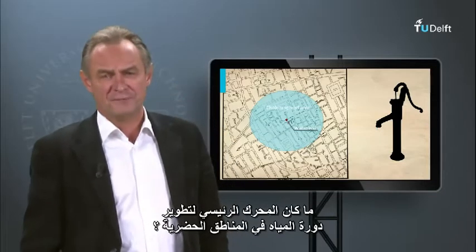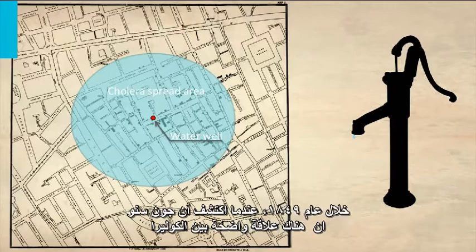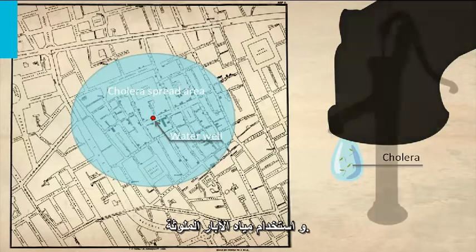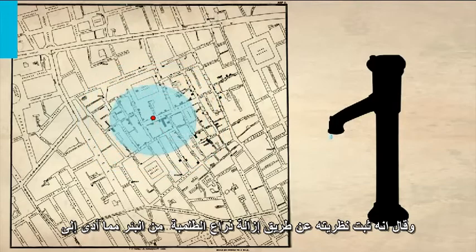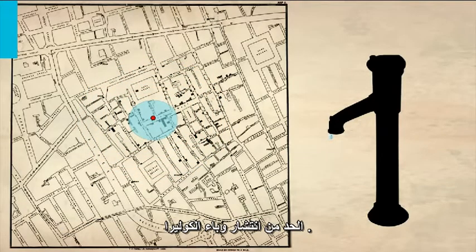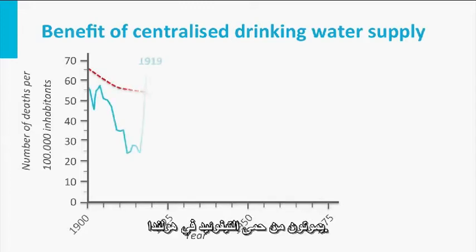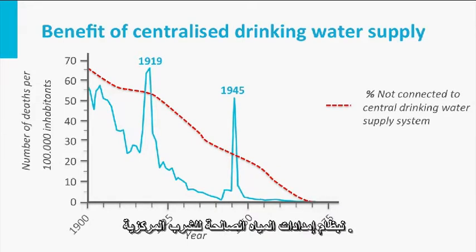What was the main driver for developing the urban water cycle? The centralized sanitation service finds its origin after the cholera outbreak in London during 1849, when John Snow discovered a real relationship between cholera and the use of contaminated water wells. He proved his theory by removing the pump handle from the well, which resulted in a dramatic reduction of the spread of the cholera epidemic. Another example is the number of people dying from typhoid fever in the Netherlands, which decreased drastically with the increasing number of people connected to the centralized drinking water supply system.